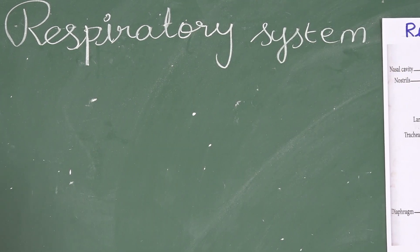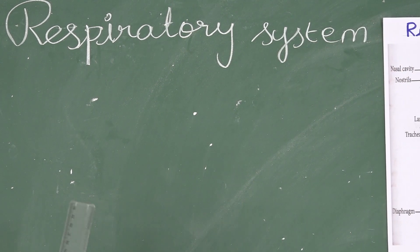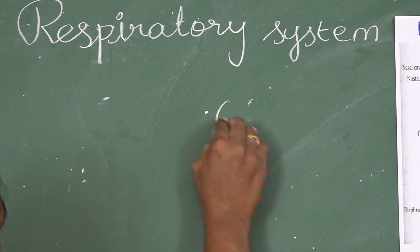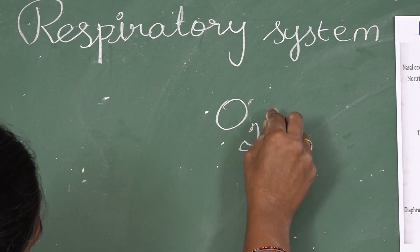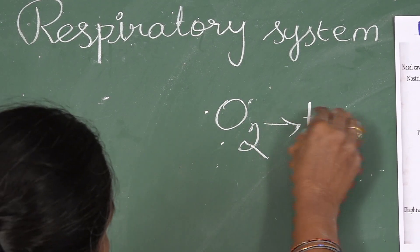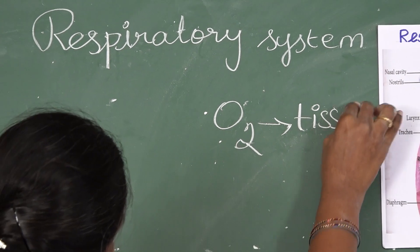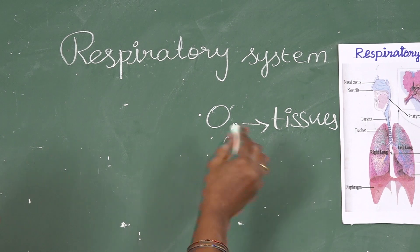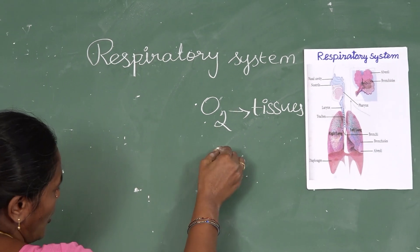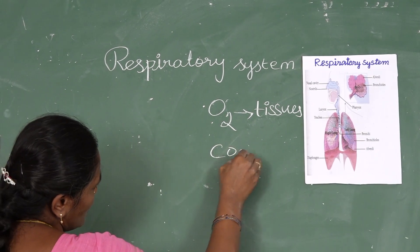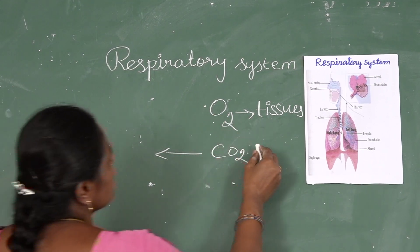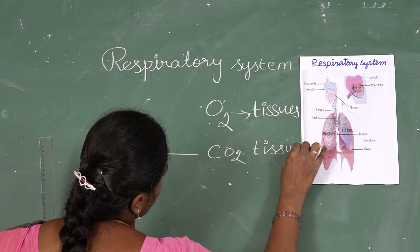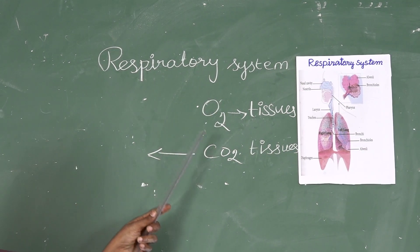What is respiration? The respiratory system provides oxygen to the tissues of our body and removes carbon dioxide from the tissues.